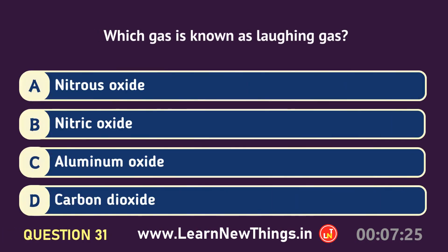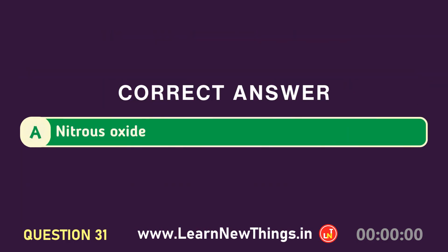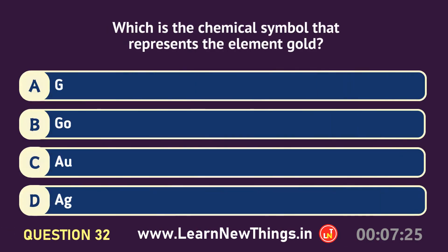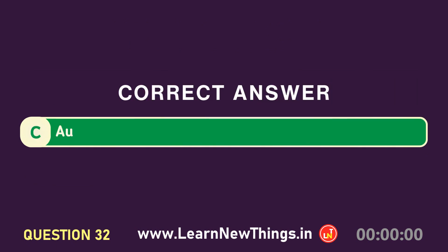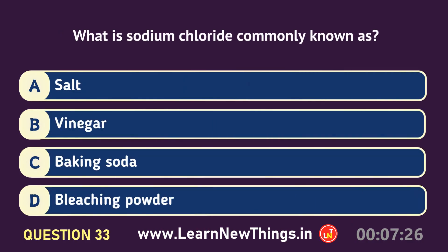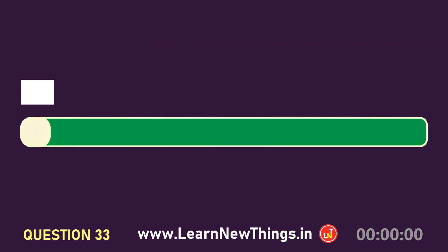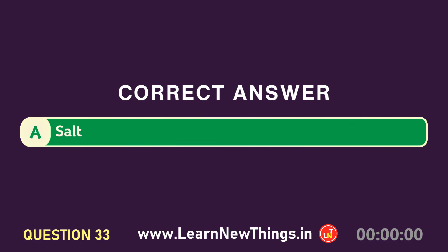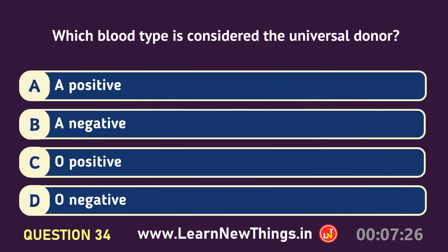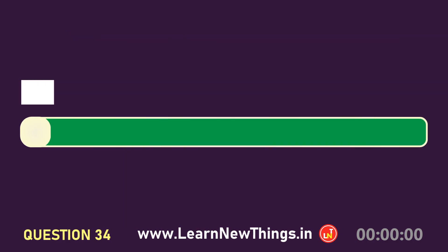Which is the chemical symbol that represents the element gold? Au. What is sodium chloride commonly known as? Salt. Which blood type is considered the universal donor? O negative.